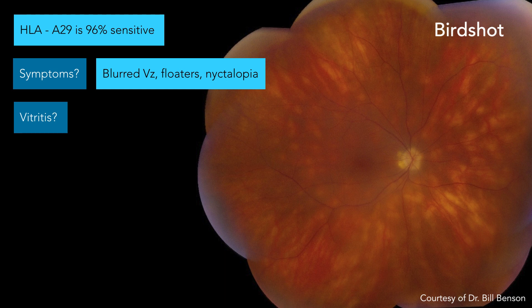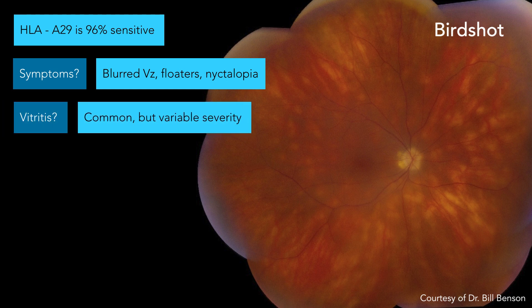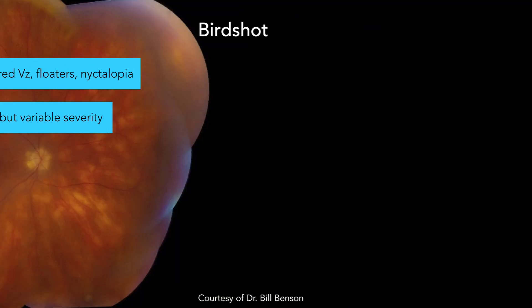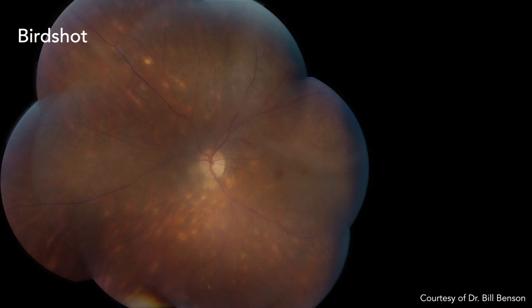Vitritis? Yes — common, but variable severity. And Aaron, are these folks likely to get CNV? No. Right — can they get it? Sure. But for testing purposes, no. This picture has a bunch of vitritis in it. The inferior nasal area is like the money shot for these guys with birdshot — that's the most common place you're going to see it. I've actually gotten tricked twice over the last two years, seeing somebody that looked like birdshot but was HLA-A29 negative and never developed vitritis or any of those other things.